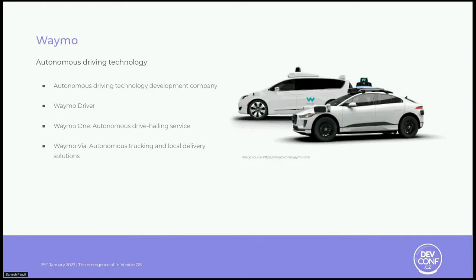Next we have Waymo. Unlike Zoox, which creates autonomous cars, Waymo is a company that develops autonomous driving technology. It operates a commercial self-driving taxi service called Waymo One and also develops driving technology for delivery vans and tractor-trailers for logistics. Waymo Via is the trucking division of Waymo. In other words, Waymo One is for moving people, whereas Waymo Via is for moving goods.